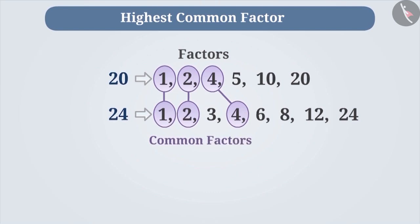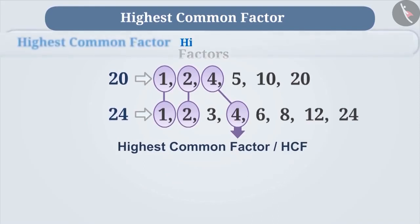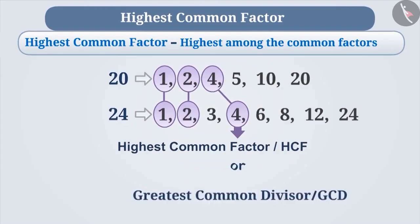4 is the highest number among the common factors of 20 and 24. Therefore, 4 is called the highest common factor. That means, for any 2 or more given numbers, the highest of their common factors is called the highest common factor or HCF. It is also known as the greatest common divisor or GCD.